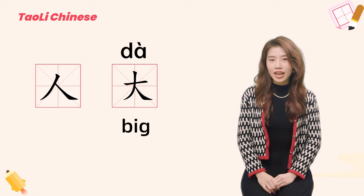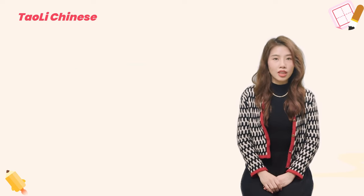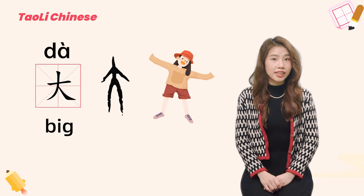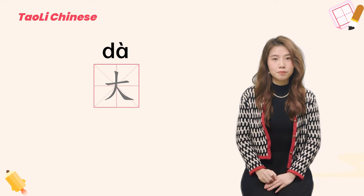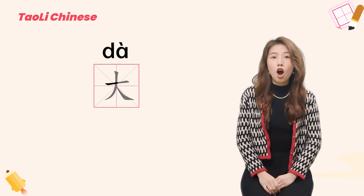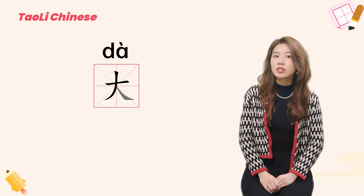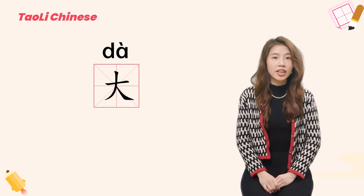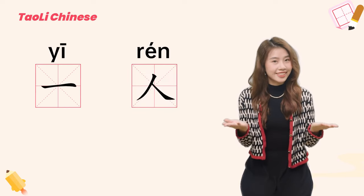So what is the connection between 大 and 人? You can imagine 大 as a person who opens his arms and tries to make himself look bigger. 大 has three strokes. The first stroke is the horizontal stroke, the second is the left slumping downward stroke, and the last is the downward right concave stroke. You can simply think of it as a combination of 一 and 人.